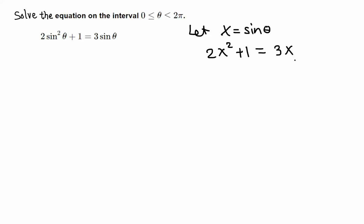Subtract 3x from both sides. So 2x² and I'm gonna write 3x first: x², x, and the number is +1 equals 0. Now we want to factor this trinomial.